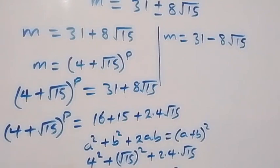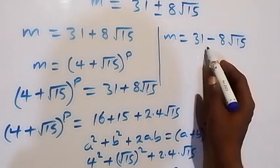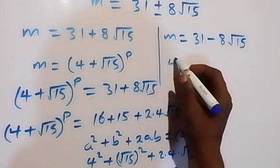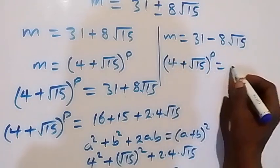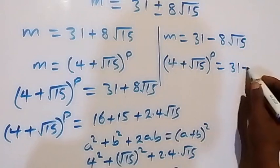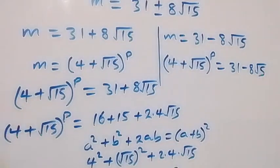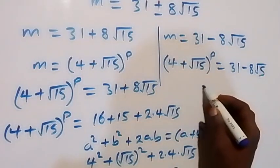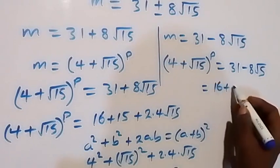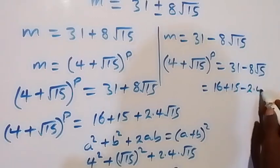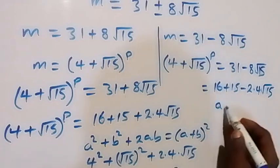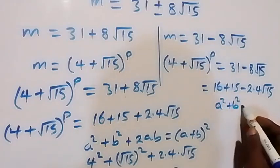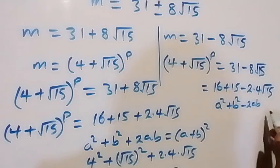For the second case, m equals 31 minus 8 root 15. We can write this as 16 plus 15 minus 2 times 4 times root 15. Using the identity a squared plus b squared minus 2ab equals (a minus b) squared, with a equals 4 and b equals root 15, this becomes (4 minus root 15) squared.